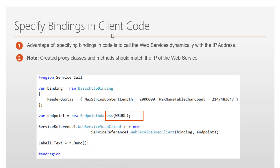The advantage of specifying bindings in code is to call the web service dynamically with the IP address. Note that the created proxy classes and methods should match the IP address of the web service. Let's understand what this means in a moment.